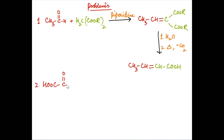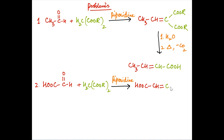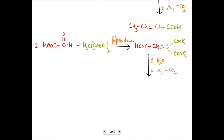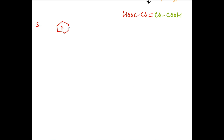In the second case, we can write the product of Knoevenagel condensation in a similar way. The dicarbonyl compound upon hydrolysis and heating loses a carbon dioxide molecule to form an alpha-beta unsaturated carboxylic acid product. In the third example, we can write the product directly, that is, the alpha-beta unsaturated carboxylic acid.